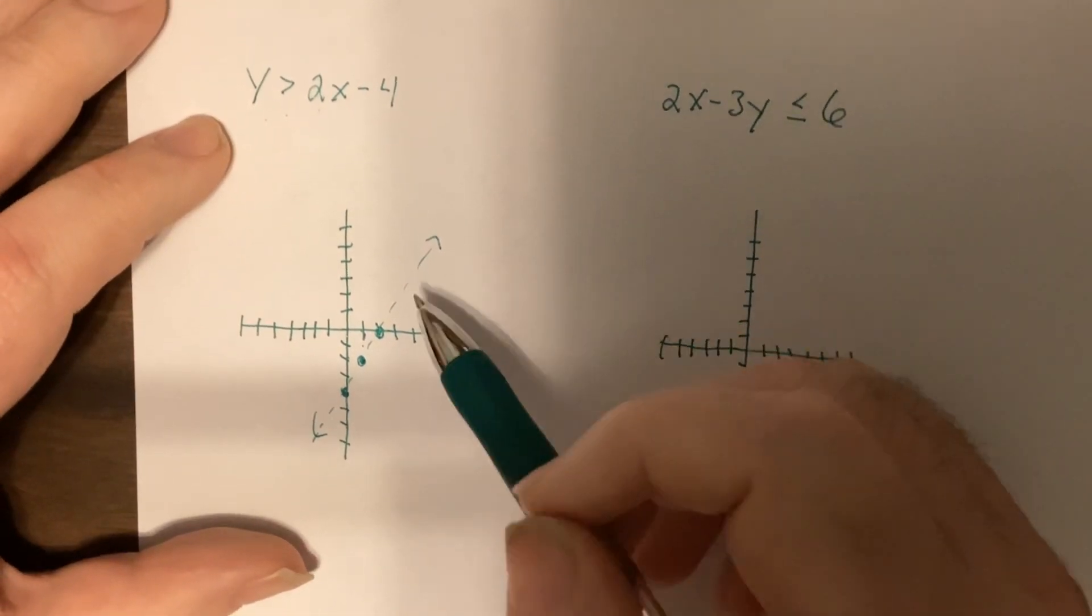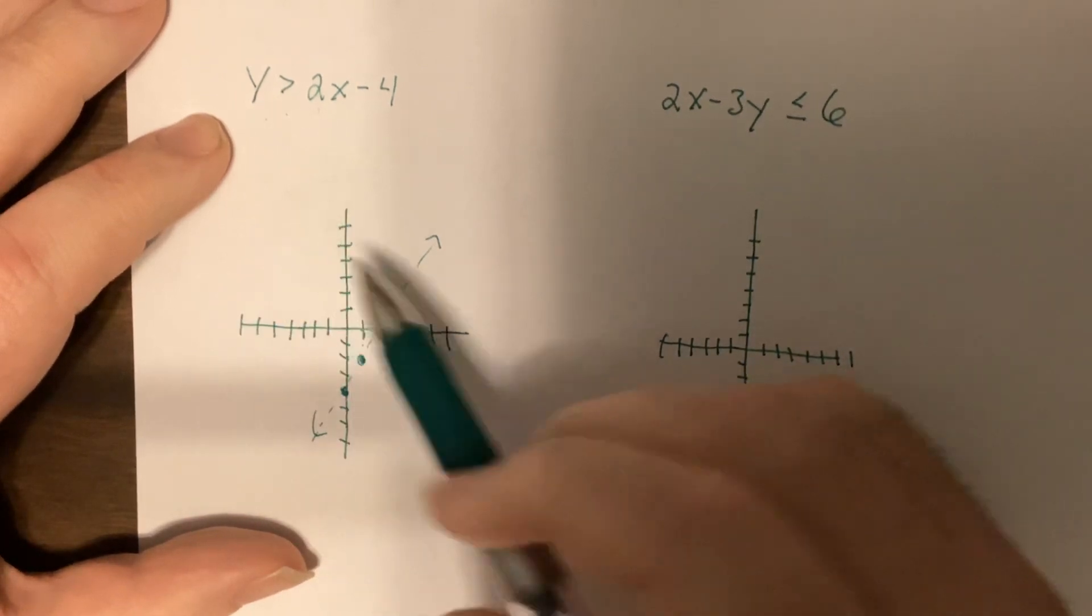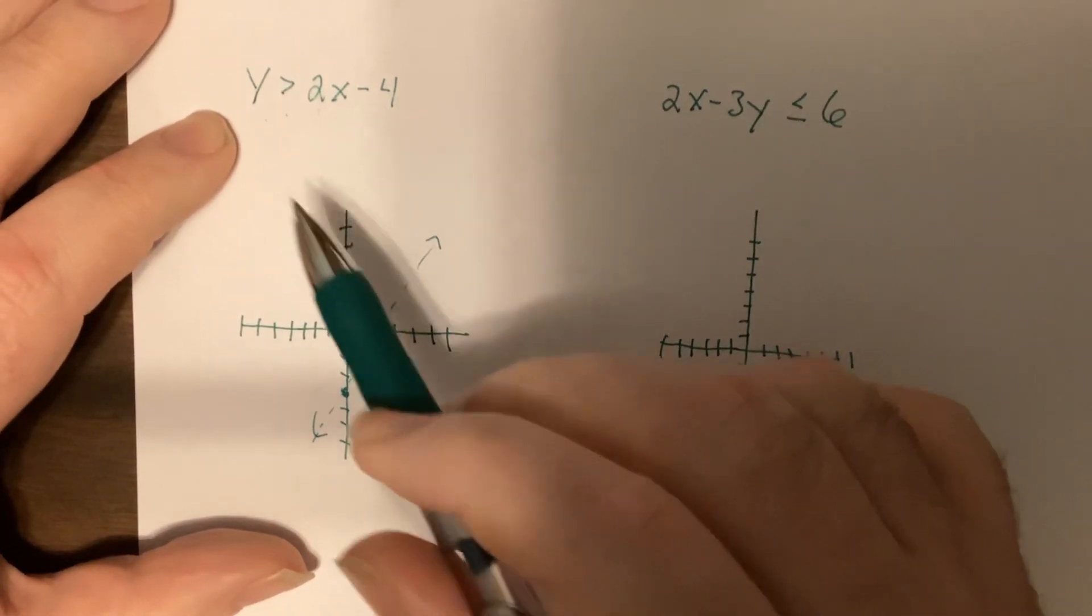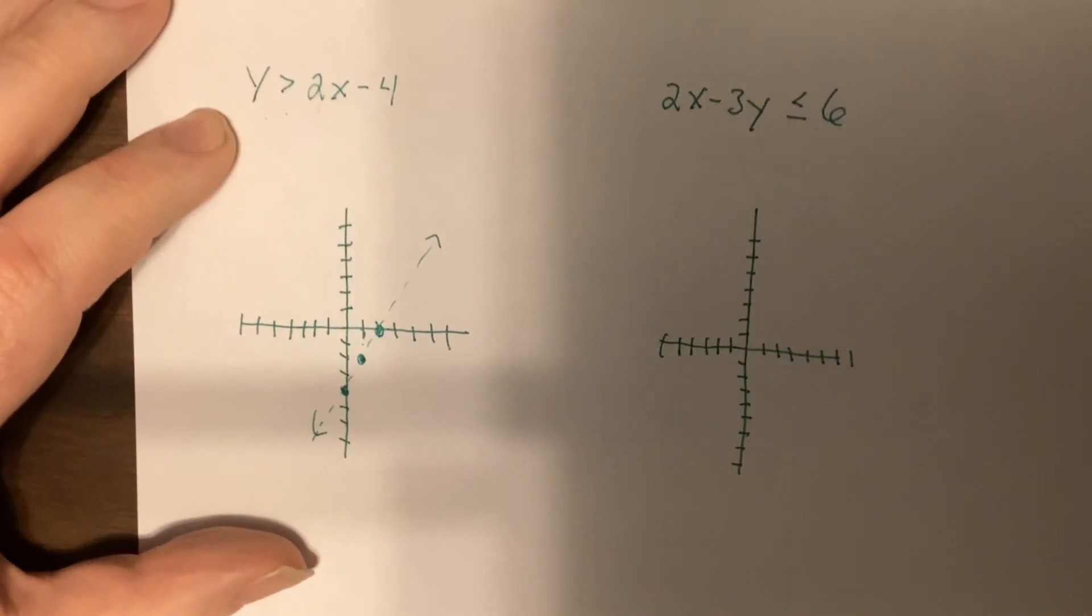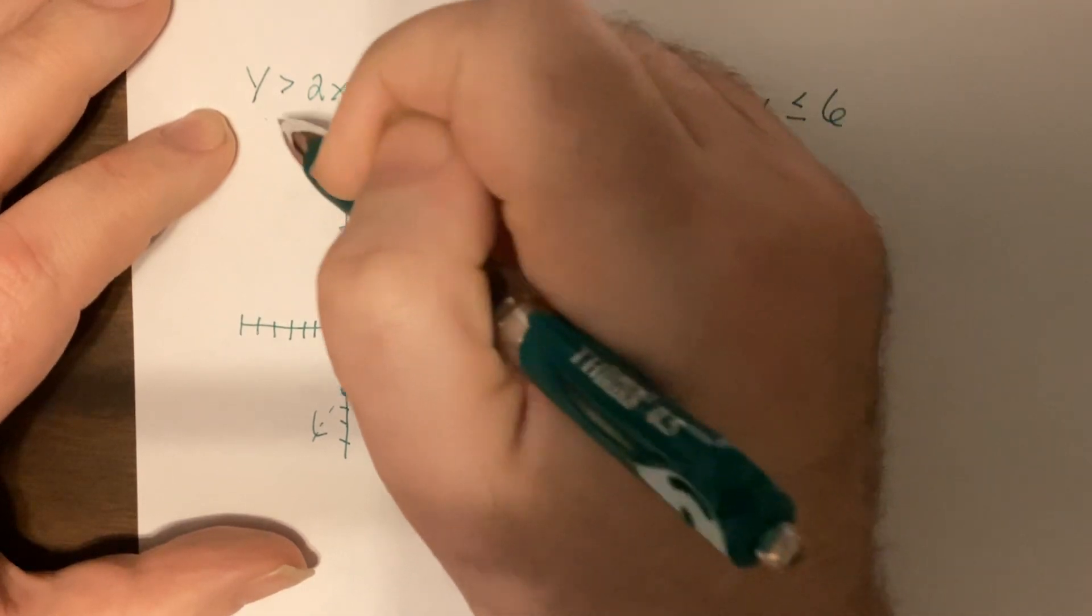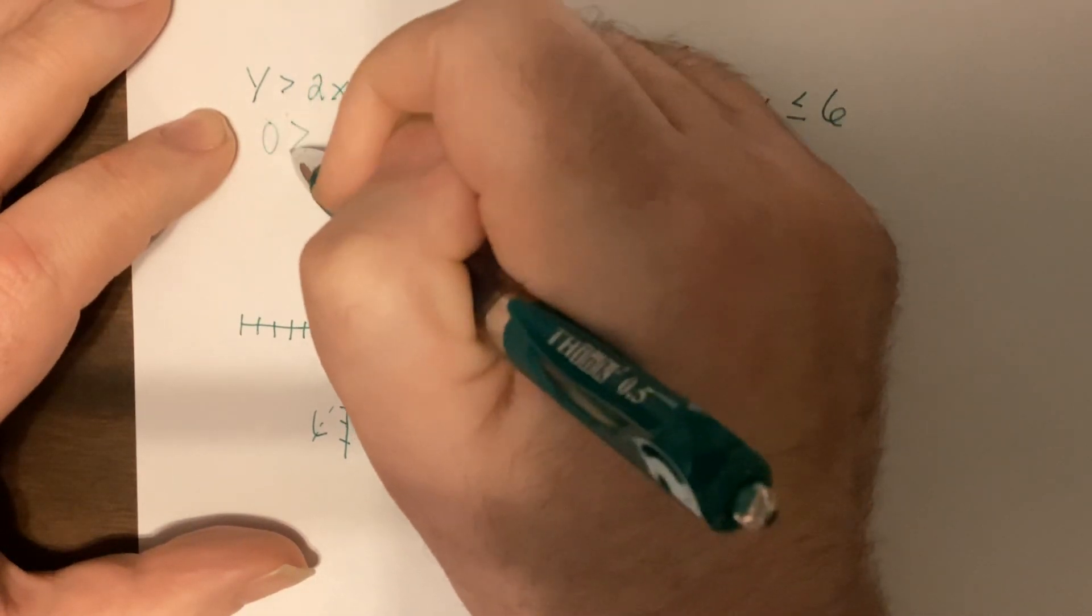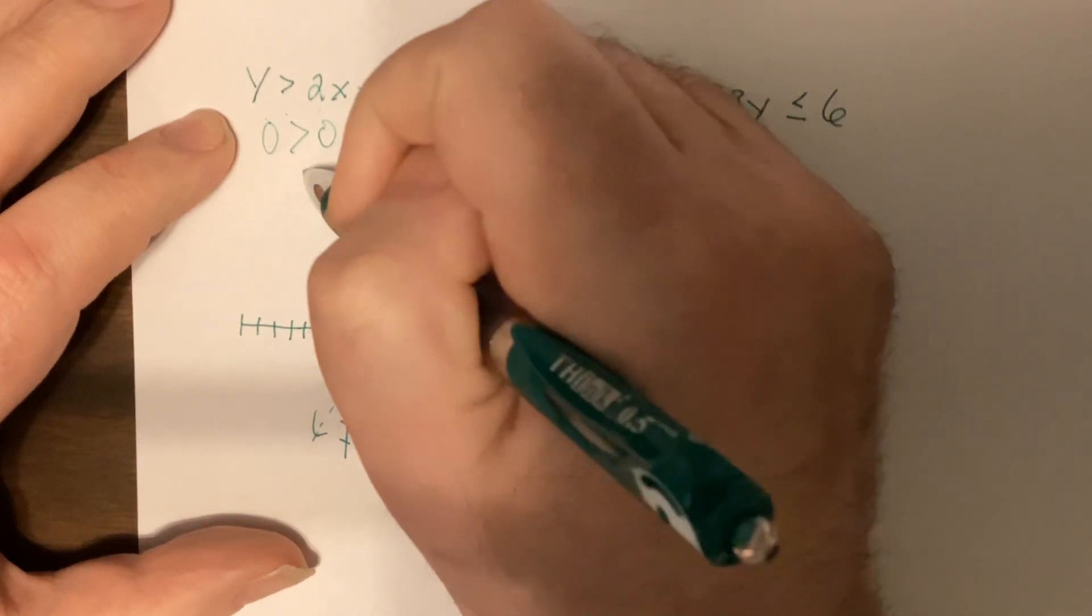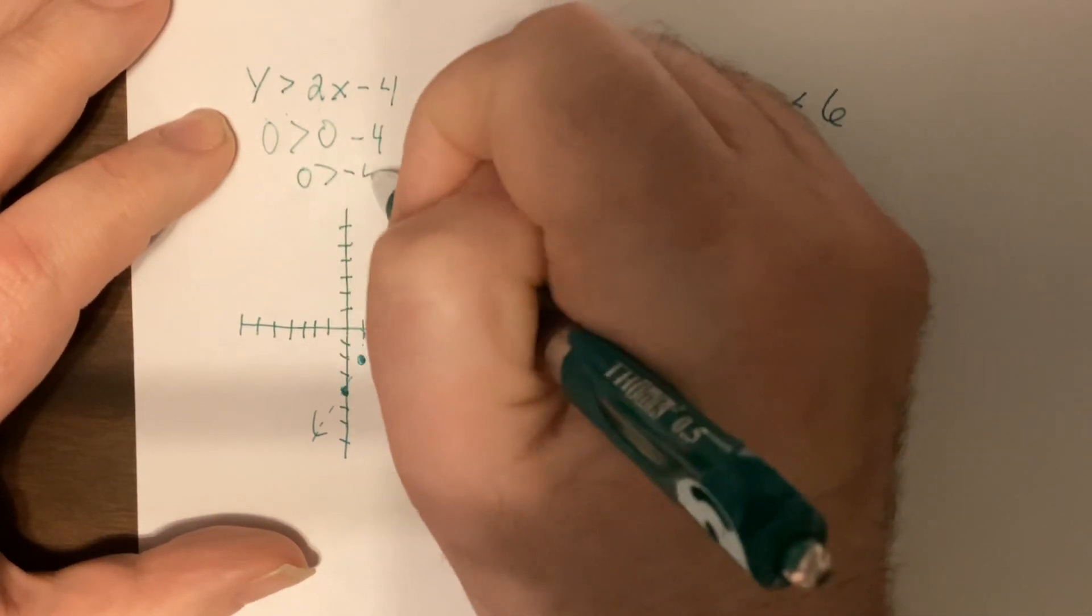Then we have to decide which side of the boundary do we shade. So you pick a point not on the line and put it into the inequality to see if it's true or false. So I'm going to pick zero, zero. Is zero greater than zero minus four? And you would say yes, it is bigger than negative four.